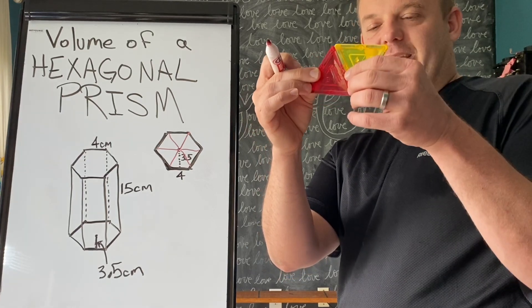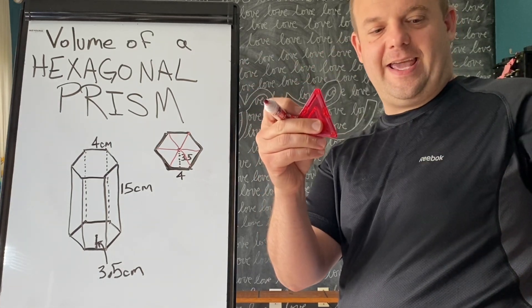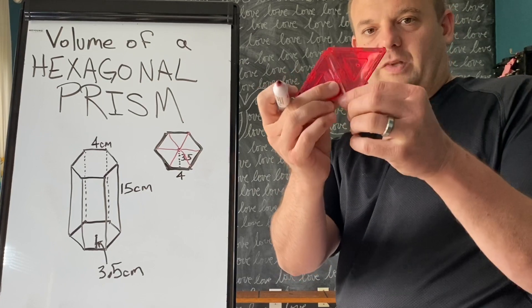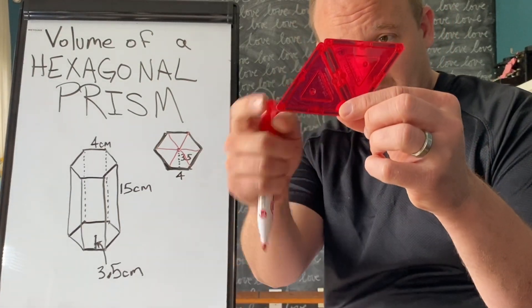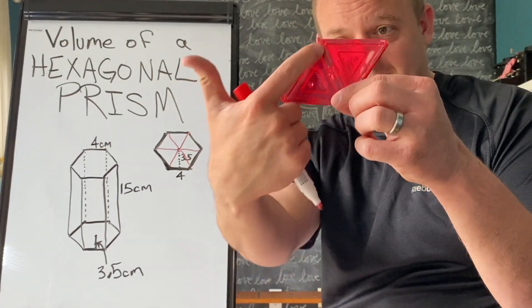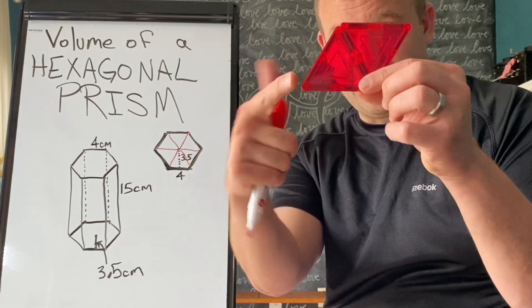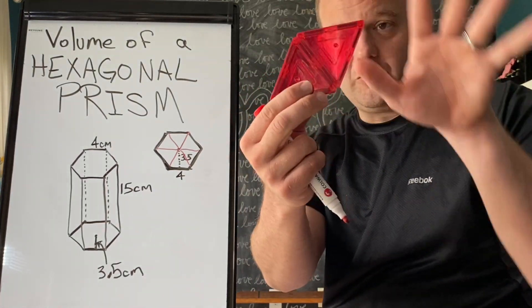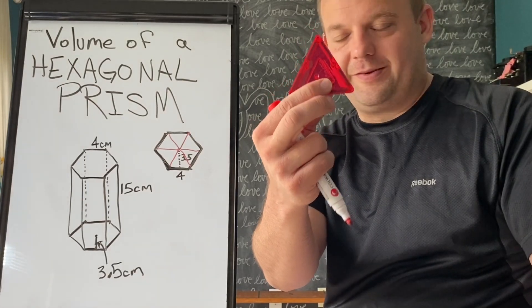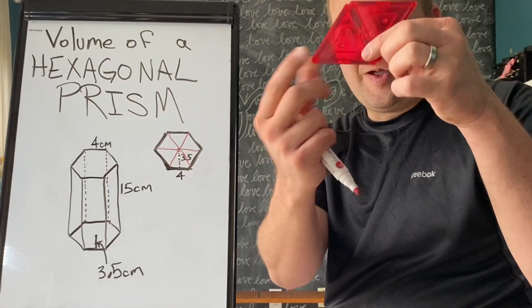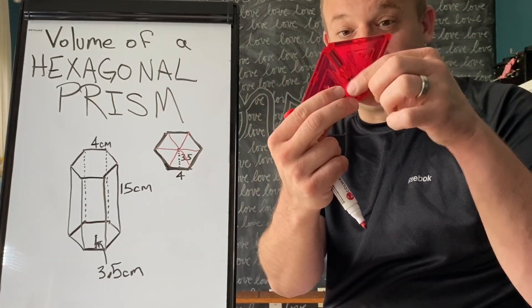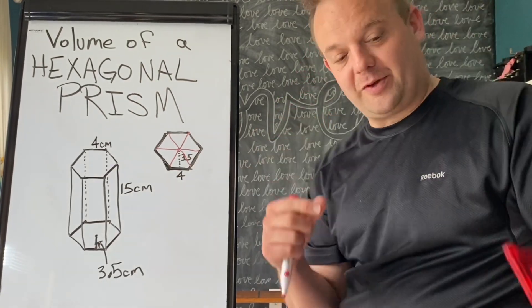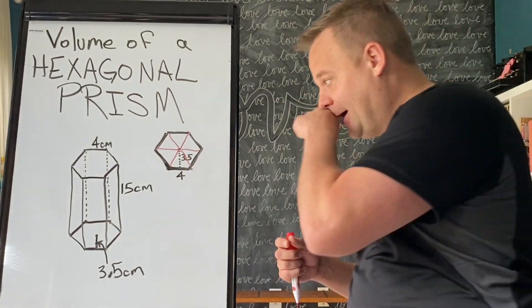The area of one triangle is base times height divided by 2. We divide by 2 because — see how this is a parallelogram? Base times height, never the slant height, always the perpendicular height, gives you the area of the whole parallelogram, and then we divide it by 2 just to get the triangle. That's where the formula comes from.